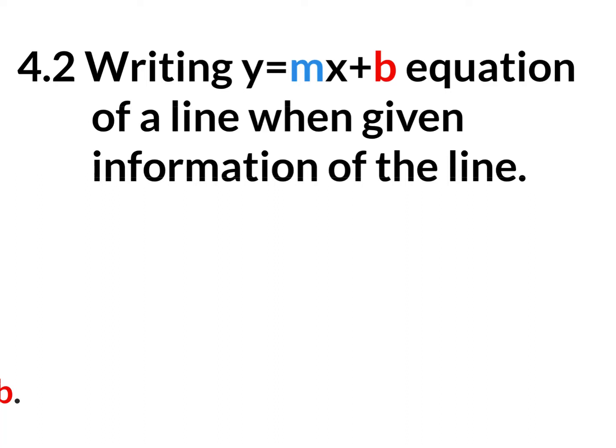What's up everybody? We're about to do the lesson on 4.2 writing equations in slope-intercept form given certain information of the line. So we should already be comfortable with slope-intercept form. Why is it called slope-intercept form? Because when it's in this form, when it's organized like this, you could clearly see the slope and the y-intercept. The slope is the m value, the number in front of x. The b value is the y-intercept, the location of where your line crosses the y-axis.